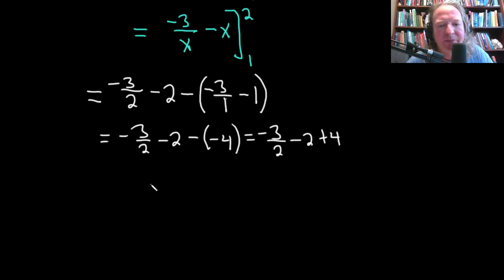This is equal to negative 3 halves, and then minus 2 plus 4 is plus 2. And we have to add these.